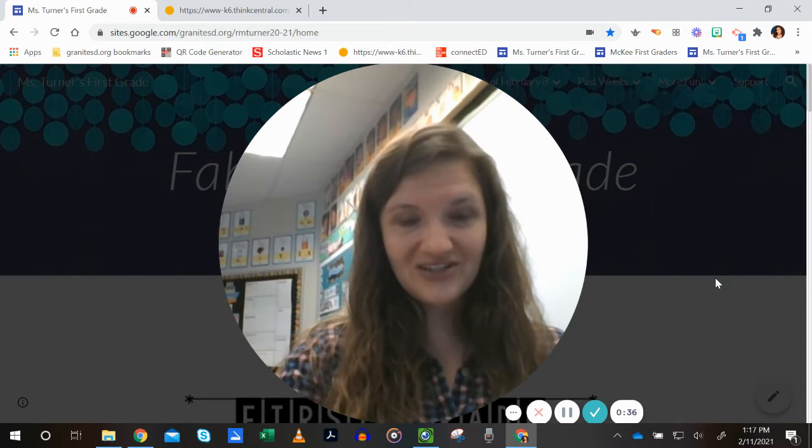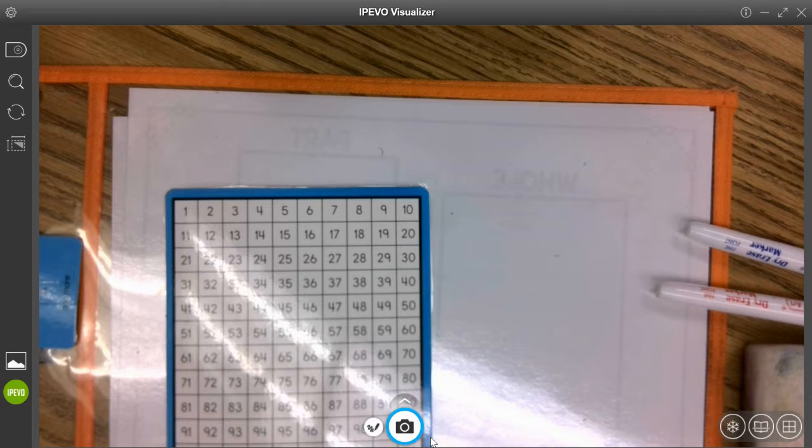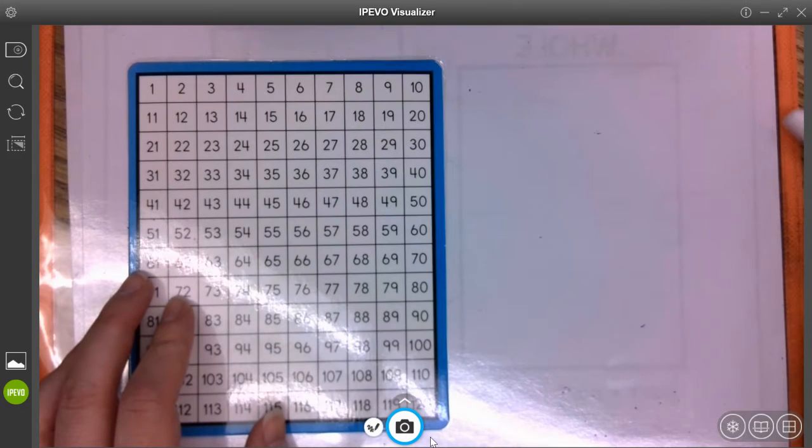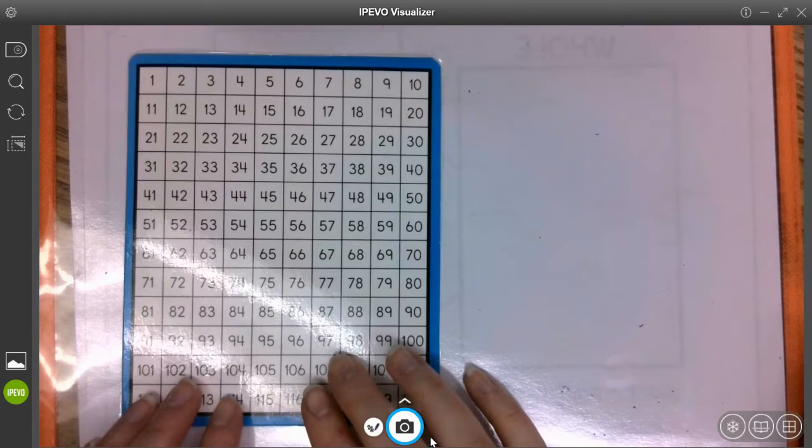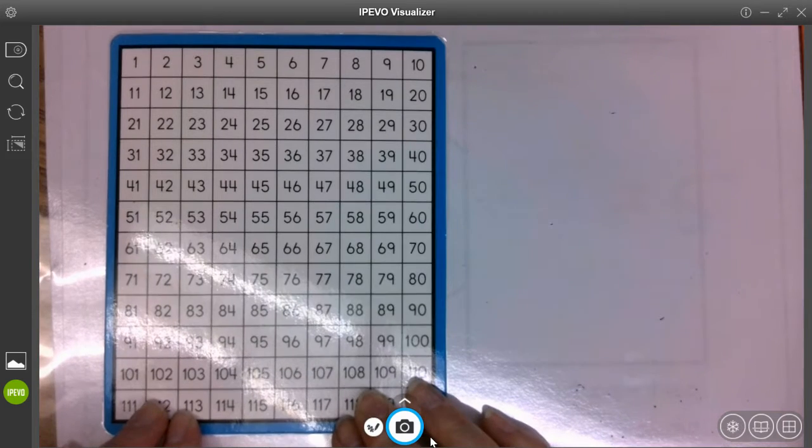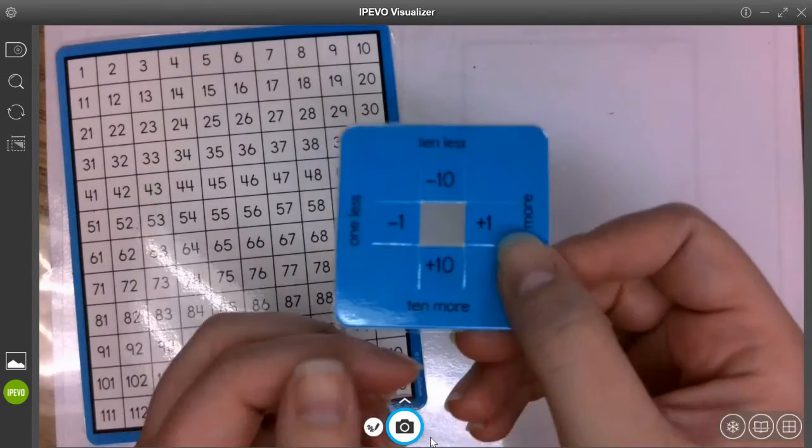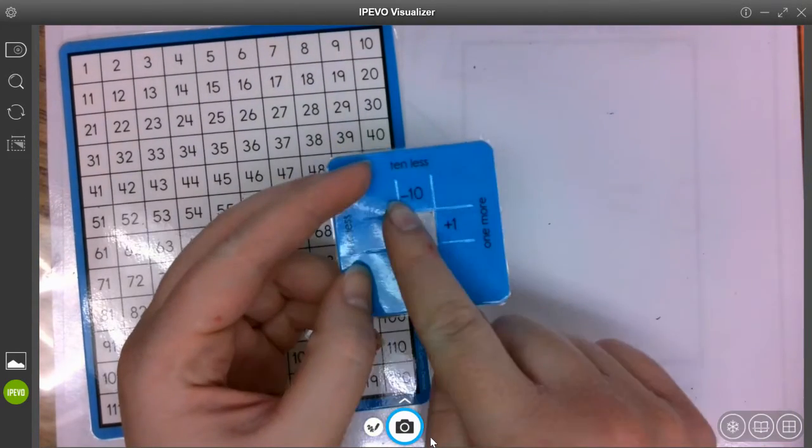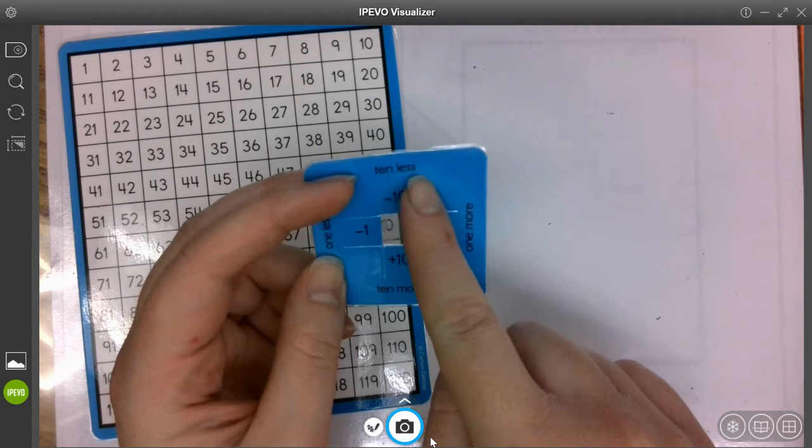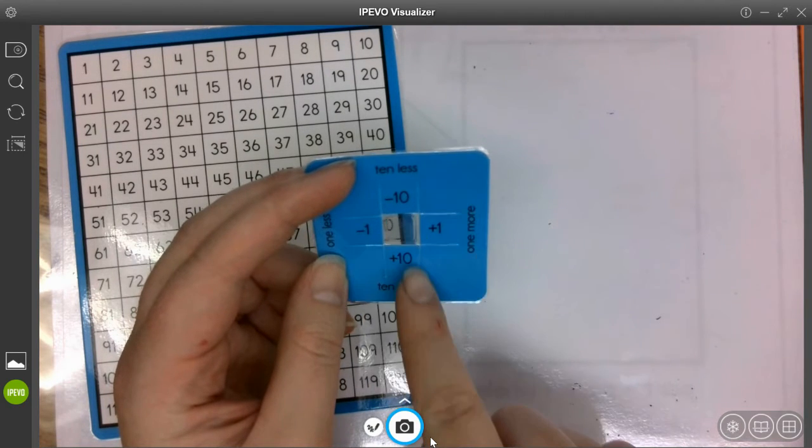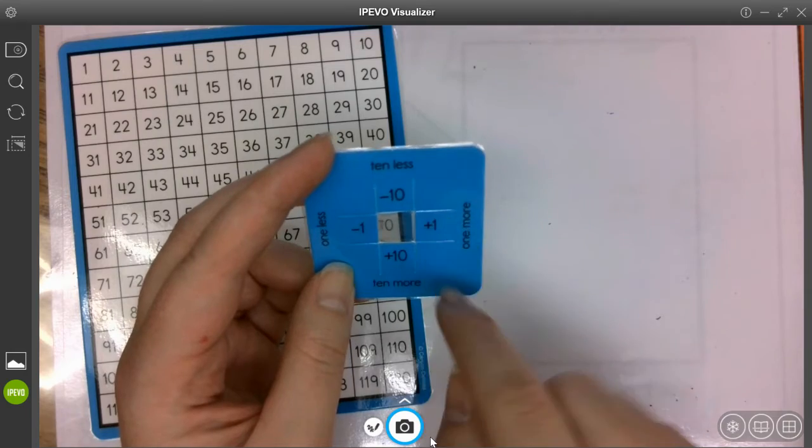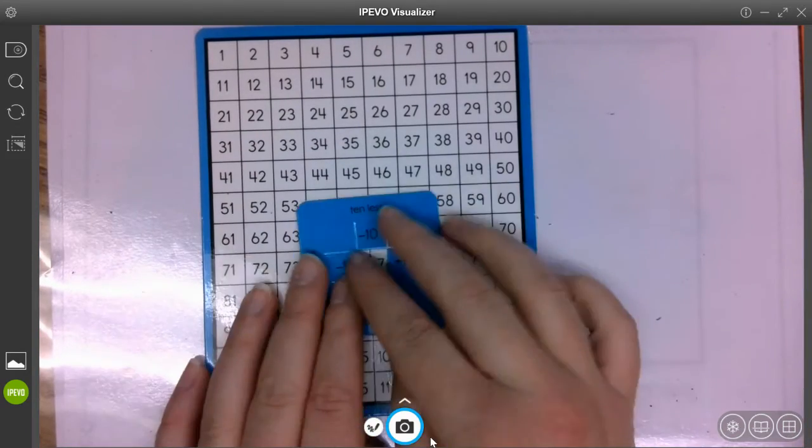So you will want your hundreds chart today when you're doing your math. Let's look at some examples. So I actually have a different hundreds chart I'm using today because I have a cool little tool I can use with this one. And this would be a great little tool to maybe see if somebody at your house can help you make for your hundreds chart. So this is my little tool. You can see it has a minus ten up at the top. It has this little window in the middle. And then above it, it has minus ten and says ten less. Below it, it has plus ten and says ten more. To the left, it has minus one, one less. And on the right, plus one or one more. So this is going to be a great tool to help us.